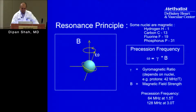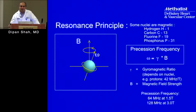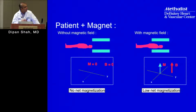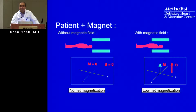There are two things to keep in mind: B-naught is the static magnetic field — 1.5 or 3 tesla, from the MRI scanner itself. B1 is the local magnetic field, which the gradients can alter. If a patient is outside the scanner there's no net magnetization; once inside the scanner, the local magnetic field the tissue experiences equals B-naught, so the protons become magnetized.